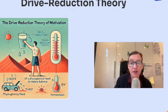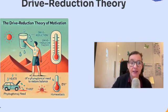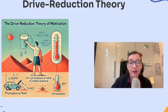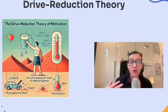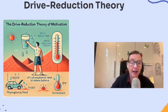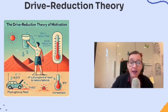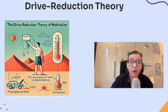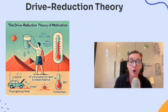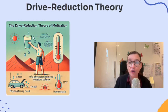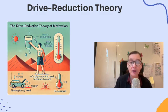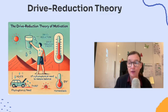Here's how drive reduction theory works. When your body is out of balance — like when you're hungry — it creates a drive. That drive motivates you to act, so you head to the fridge, grab a sandwich, and eat. This behavior satisfies your drive for food and restores homeostasis. To summarize: a physiological need creates a drive, the drive motivates behavior, and as a result the drive is reduced and homeostasis is restored.